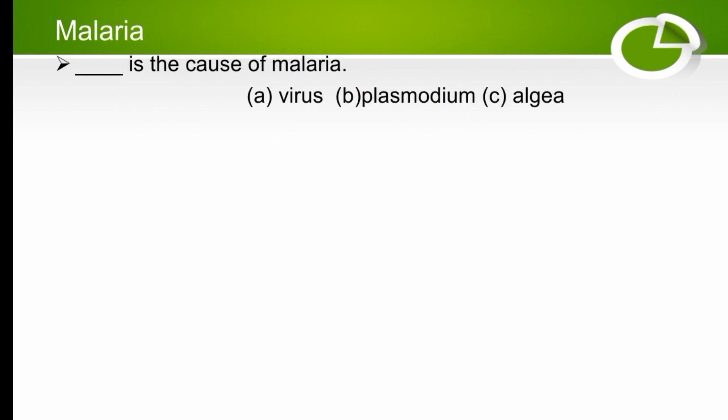What is the cause of malaria? The options are virus, plasmodium, or algae. The cause of malaria is plasmodium, so the right option is plasmodium.